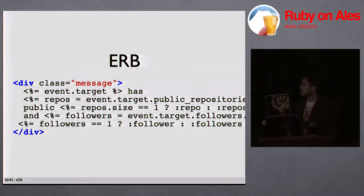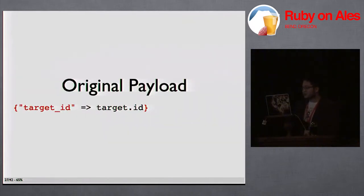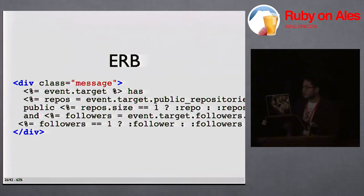We also reworked the way our templates were rendered. This is actual code from one of the simpler templates — it's like this nasty ERB, you look at it and don't really know what it says. It also uses the payload with each event. We used to store just the ID for things like a follower event's target, so we had to load the target each time this event is rendered, which is why we want to pre-cache it. The template rendering is pre-cached as soon as the event model is created, and it gets rendered outside of Rails, just in a Ruby job.